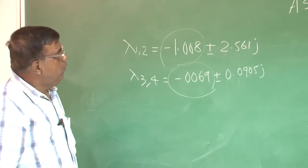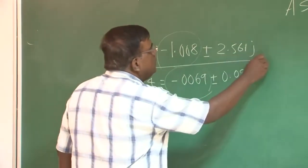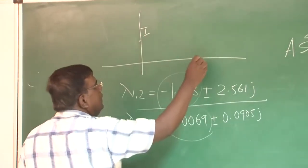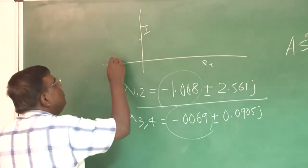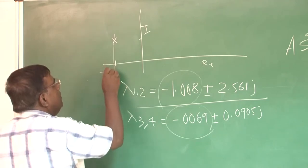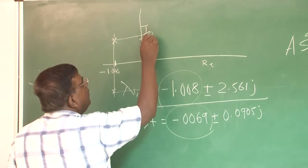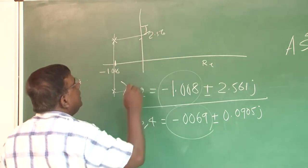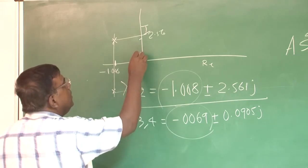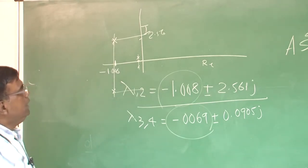And now what is important to see here, that this pair of roots, the real part if I plot, it is imaginary, it is real. So it is, let us say, minus somewhere here, minus 1.008 and these values are 2.56 plus minus. But the other one is somewhere here, that is minus 0.0069.